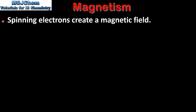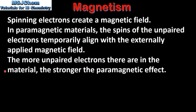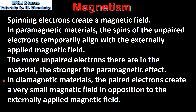Spinning electrons create a magnetic field. In paramagnetic materials, the spins of the unpaired electrons temporarily align with the externally applied magnetic field. The more unpaired electrons there are in the material, the stronger the paramagnetic effect. In diamagnetic materials, the paired electrons create a very small magnetic field in opposition to the externally applied magnetic field. This explains why paramagnetic materials are attracted by a magnetic field and diamagnetic materials are weakly repelled by a magnetic field.